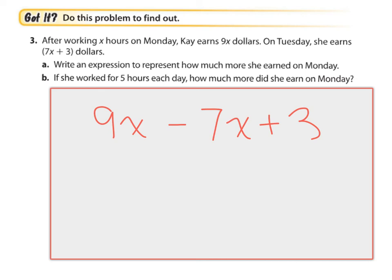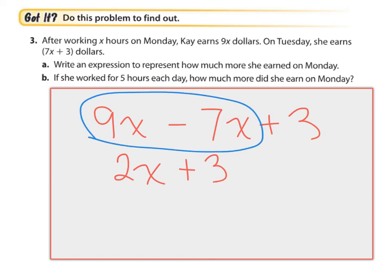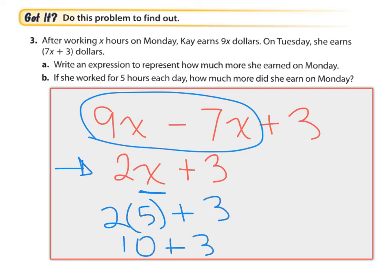9x minus 7x is simply 2x plus 3. Only these two terms work together — those are the like terms. If she worked for 5 hours each day, how much more did she earn on Monday? We substitute x equals 5: 2 times 5 plus 3. 2 times 5 is 10, plus 3 is 13. So she earned $13 more on Monday than she did on Tuesday.